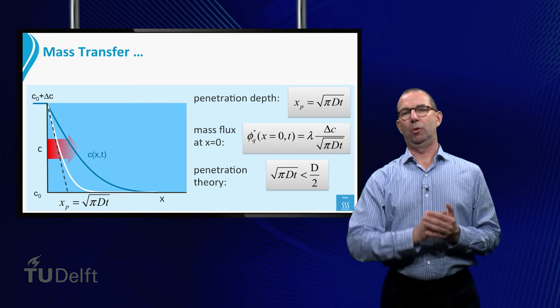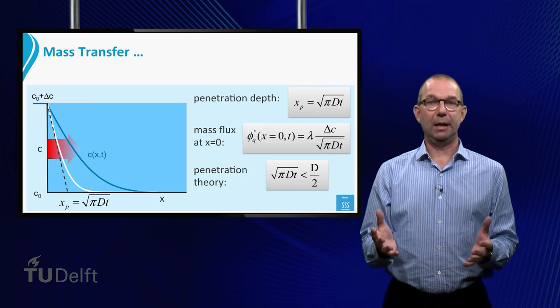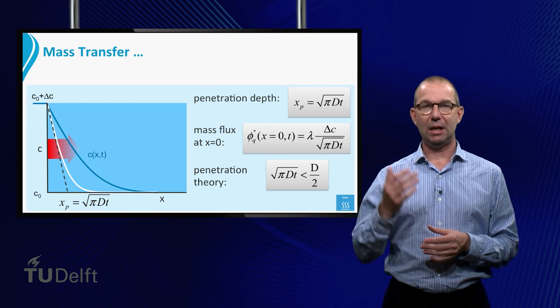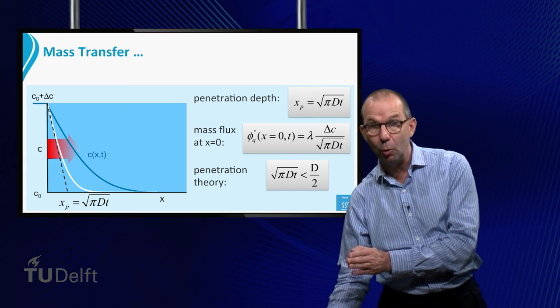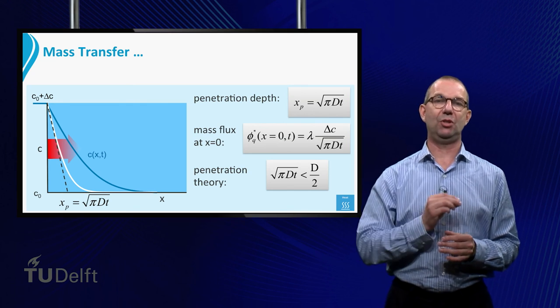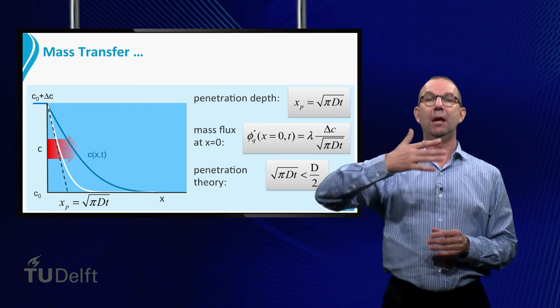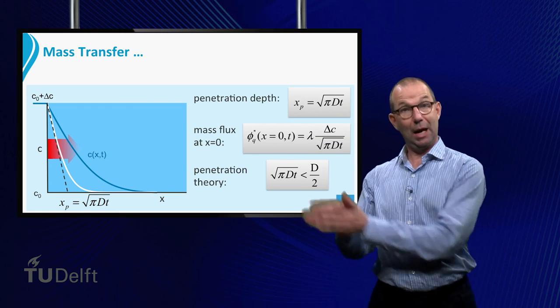One final word. We have discussed only warming up of an object. Luckily, cooling down, setting at t equals zero, the temperature of the left side to a lower value is also covered by what we discussed. All that happens is that the temperature profile is flipped along the x-axis and that now heat is flowing out of the plate.